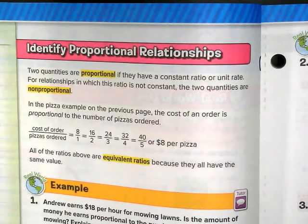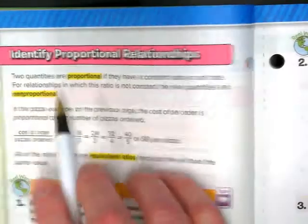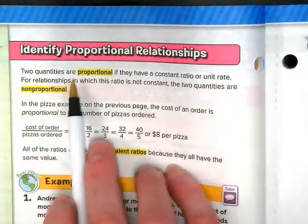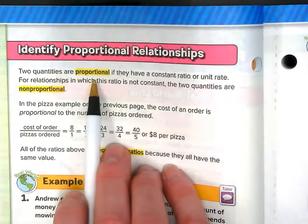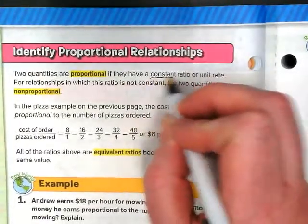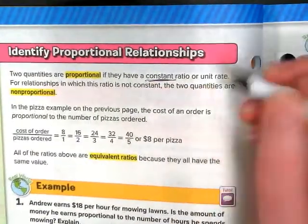So we're starting with proportional relationships. First I want to review a little bit of vocabulary. Two quantities are proportional if they have what's called a constant ratio or a unit rate.